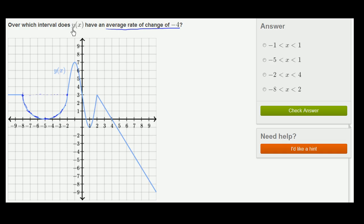So another way of asking over which interval does y of x have an average rate of change of negative 4 is, can you come up with an interval where the slope between the endpoints of the interval is negative 4? So let's see the choices they give us.